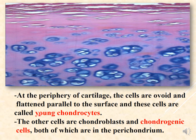At the periphery of the cartilage, the cells are small, ovoid, or flattened in shape — flattened parallel to the surface. These cells are called young chondrocytes.